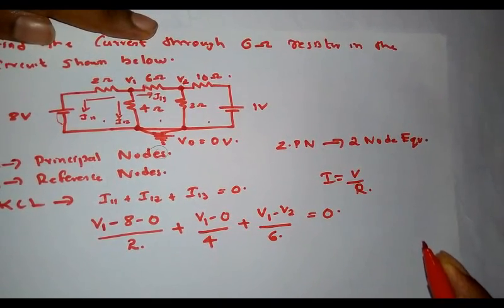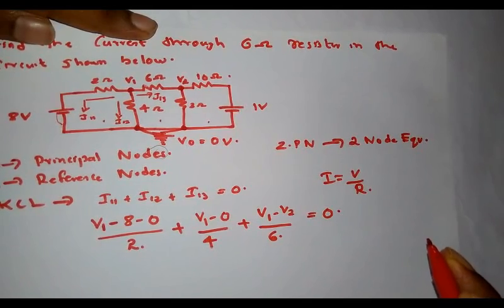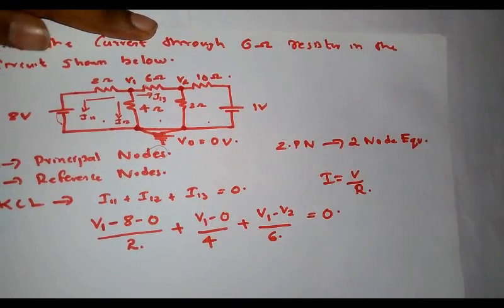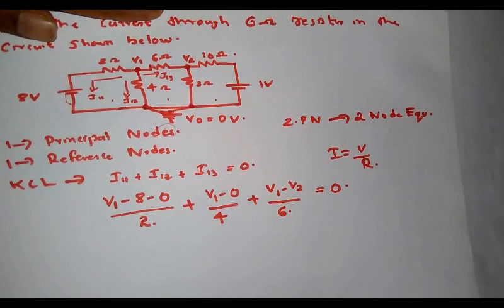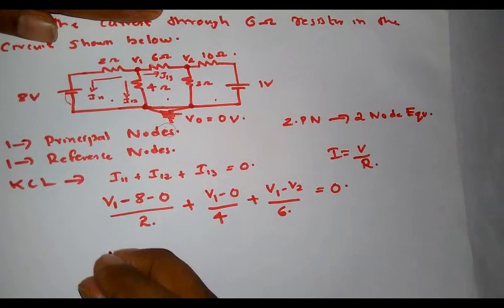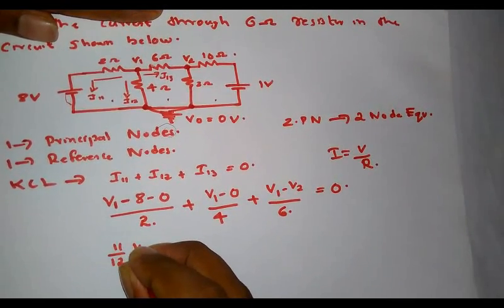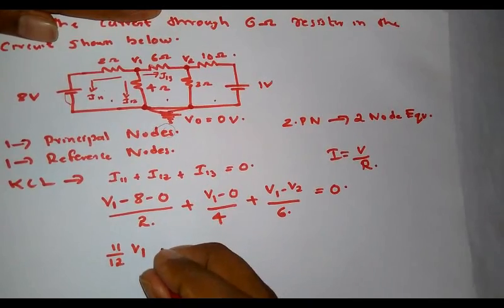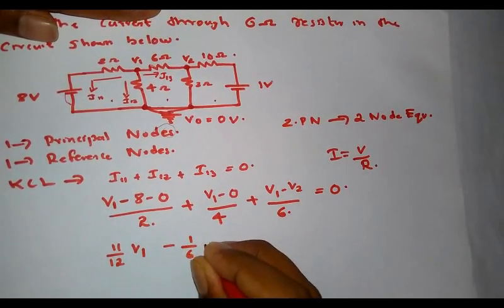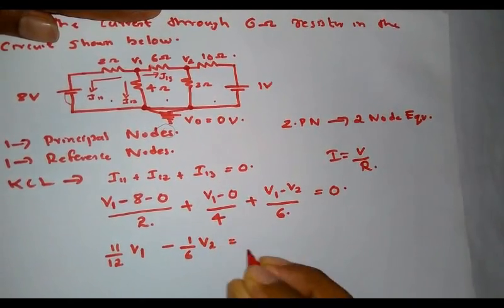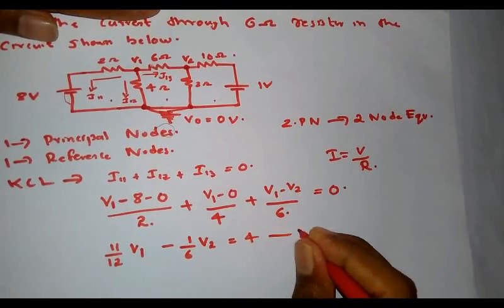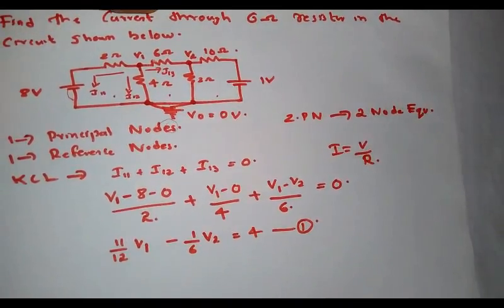According to Kirchhoff's current law, I11 + I12 + I13 = 0. This equation can be simplified to: (11/12)V1 − (1/6)V2 = 4. This is the first simplified node equation.